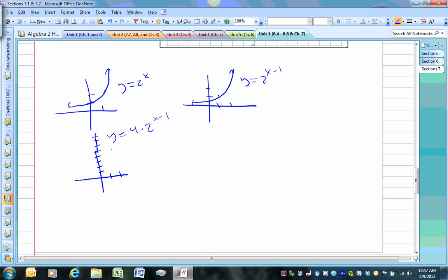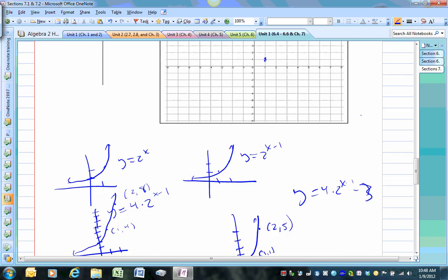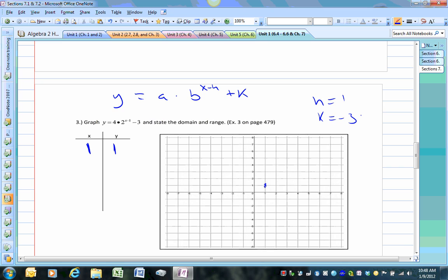So, if I vertically stretch it, now I'm going to have 1 comma 4, and 2 comma 8. And then I shift it down 3, the graph looks more like this. So, that's why we really want to be careful here with the whole h and k thing for exponential functions is because h and k is not going to actually be a point on the graph, but it does tell you how it compares to the parent function.